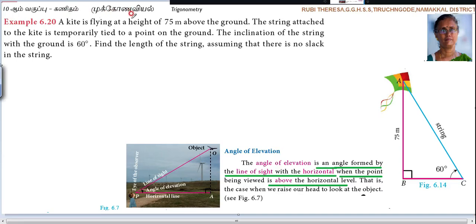A kite is flying at a height of 75 meters above the ground. The string attached to the kite is temporarily tied to a point on the ground. Which is ground? BC is ground. So this is the string tied to a point on the ground. So C is the point, the tied point.